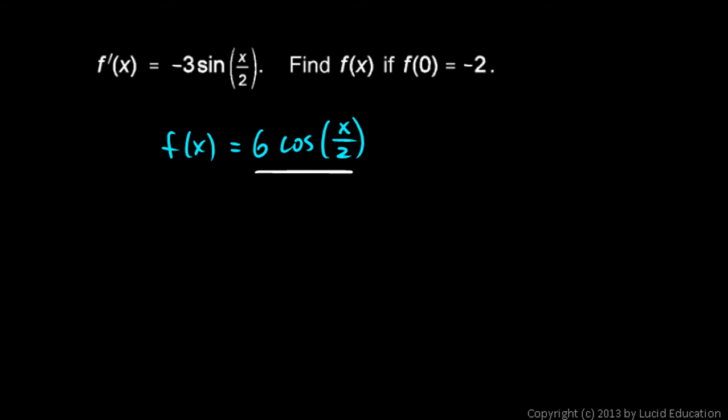Okay, and now just check. Take the derivative of this. The derivative of that is going to be 6 times the derivative of that. And the derivative of cosine x over 2 is negative sine x over 2 times the derivative of the inner function, and there you see that 6 and the 1 half gives us the 3, and we have our negative sine right there. So that is correct.